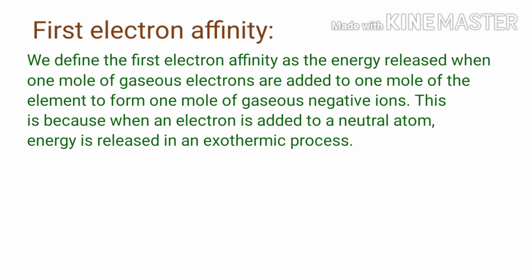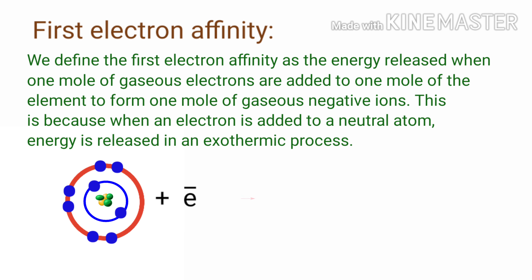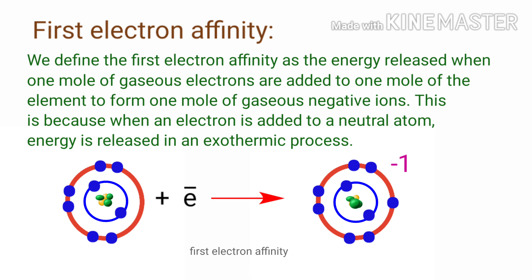First electron affinity: we define the first electron affinity as the energy released when one mole of gaseous electrons are added to one mole of an element to form one mole of gaseous negative ions. This is because when an electron is added to a neutral atom, energy is released in an exothermic process.